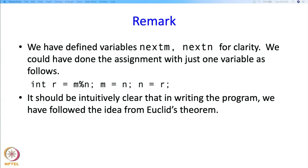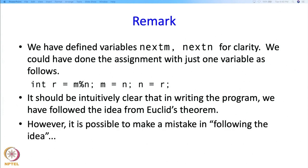Now, intuitively it should be clear that we have followed Euclid's, the idea from Euclid's theorem. But we already said that there can be one mistake that we could make, we could just write m and n, the new values of m and n directly into m and n, that could be one mistake. Then you might also worry, is m always going to be larger than n? Are we taking care of that? Do we need to take care of that? So these are things that we need to worry about because if those things are not working out, then maybe our program will not run correctly.